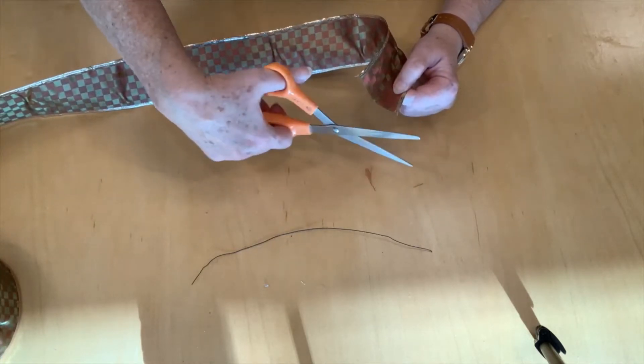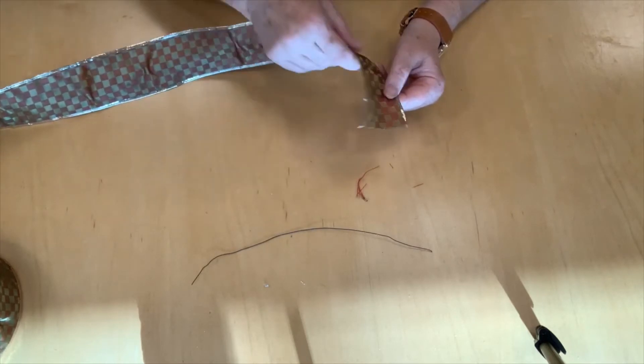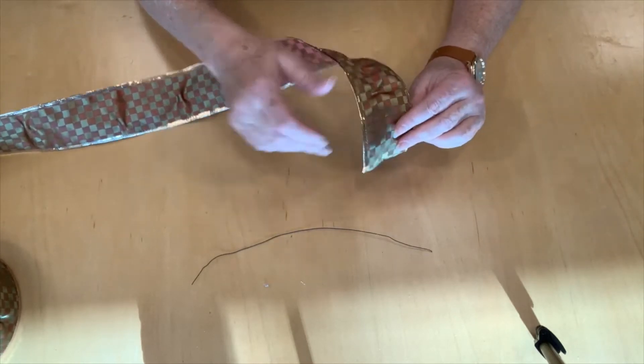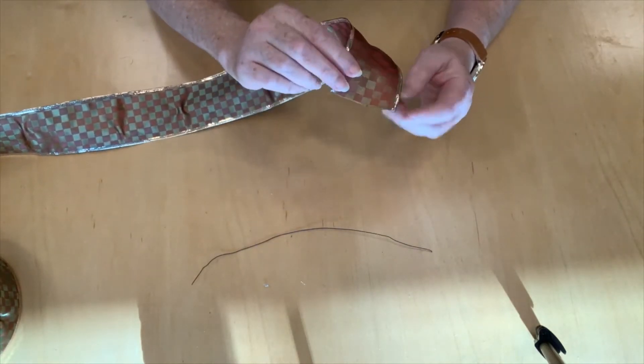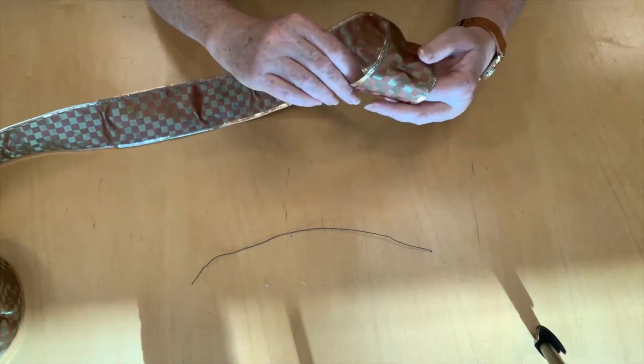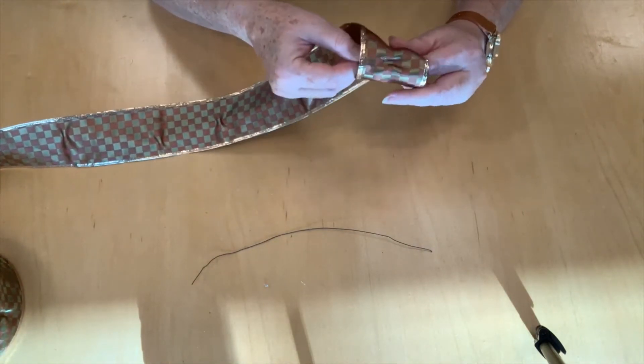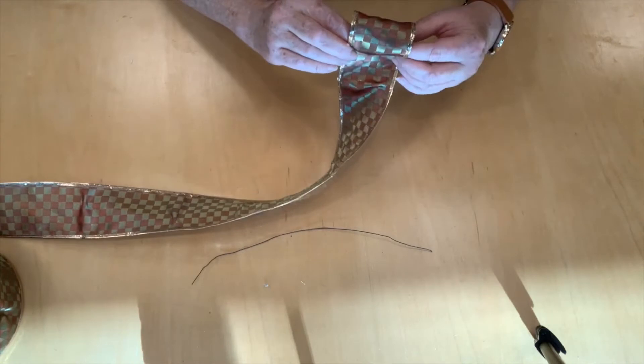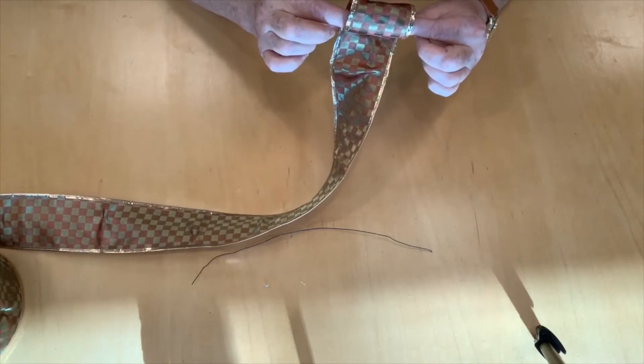So first of all, you're going to start by making the center of your bow. Clean up that edge a little bit. So you're going to take your ribbon and you're just going to curl it into one interior loop. So you've got a loop here that's going to be your center.